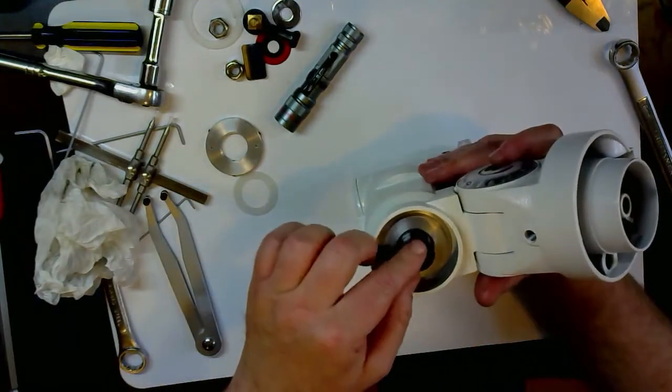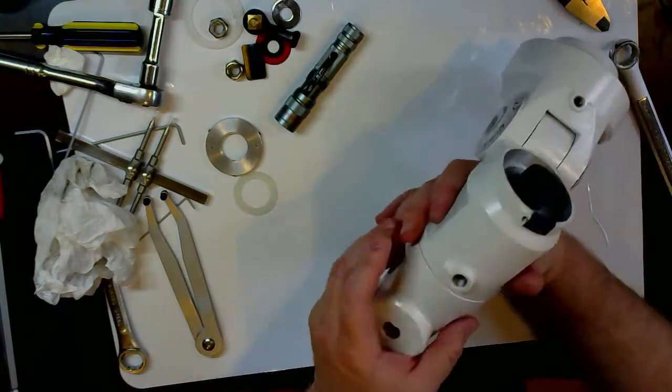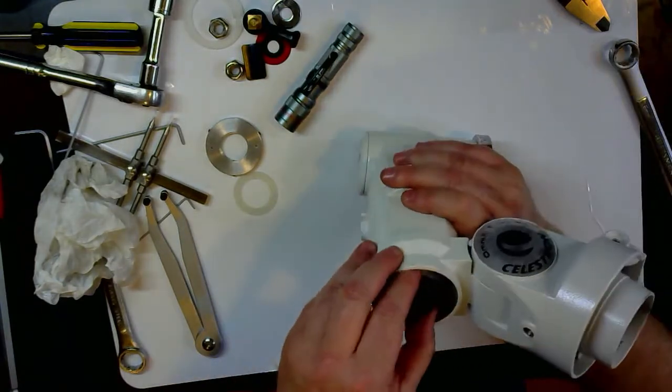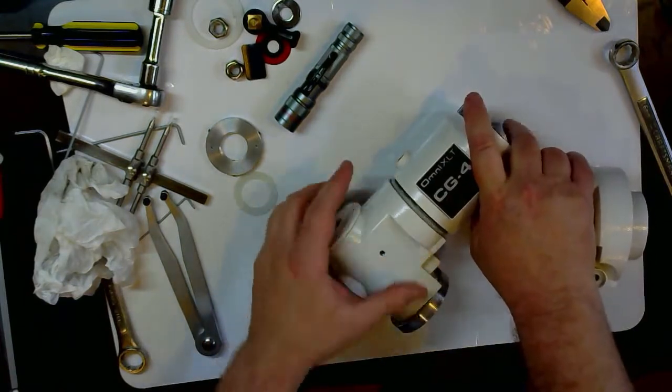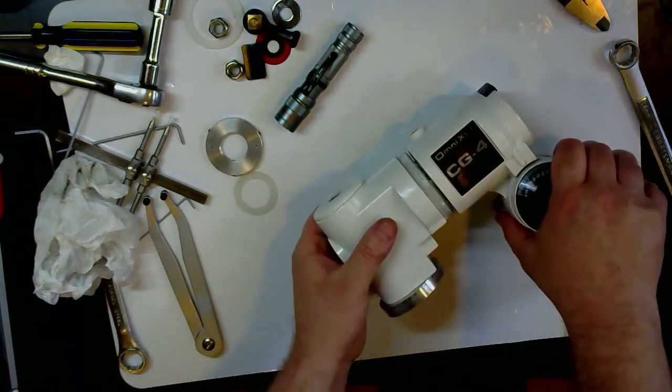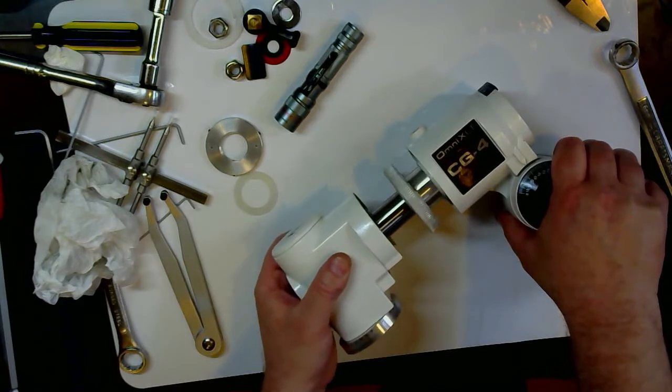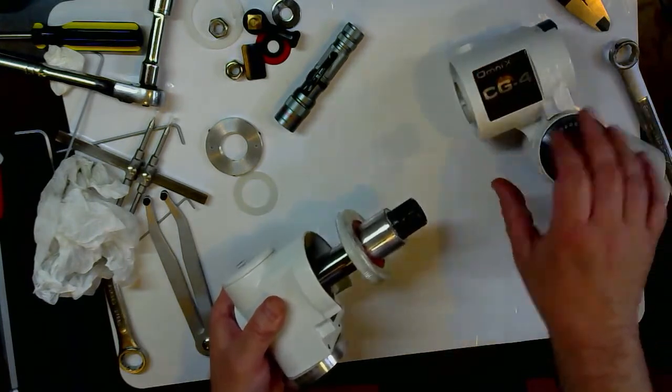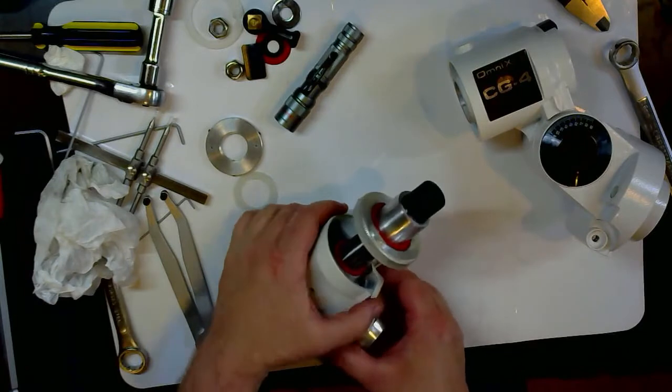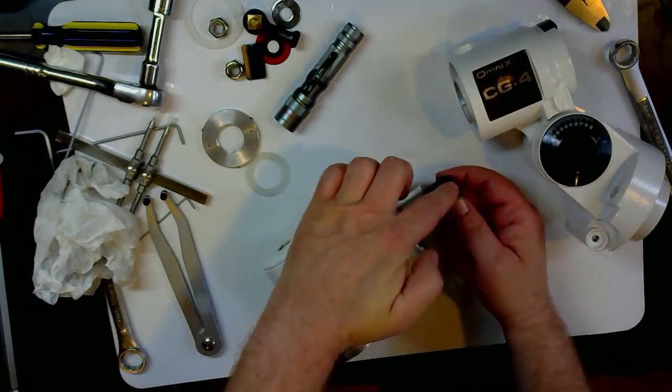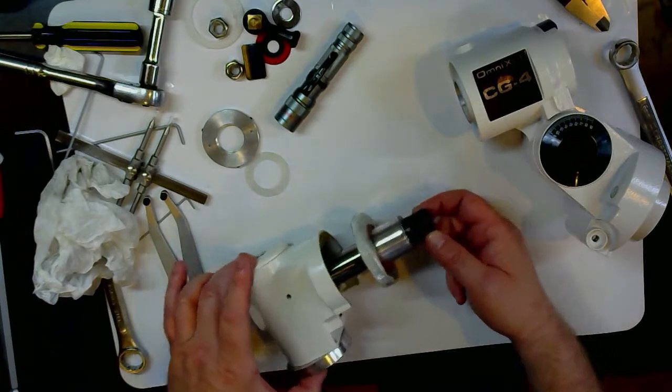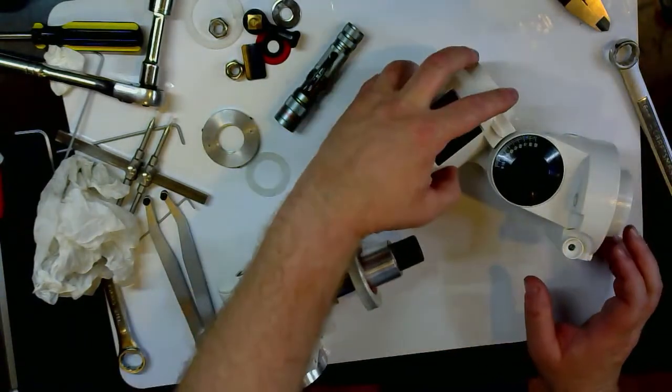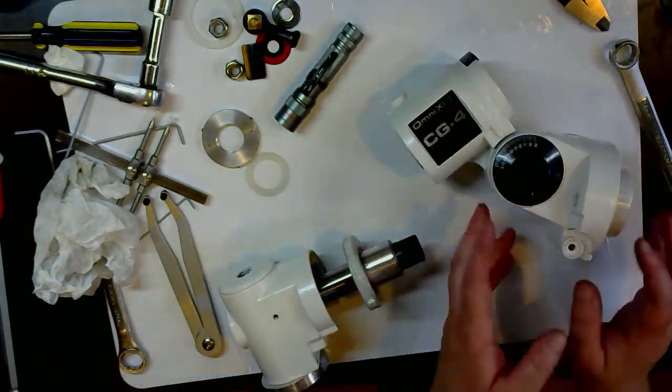So now we have the right ascension shaft and this housing. So theoretically, I think at this point, there you go, you can just slide them apart. Okay, so now we have the right ascension axle, the declination housing. Here's the right ascension housing and then the base.